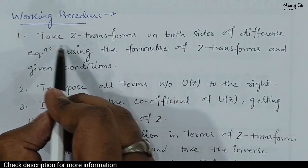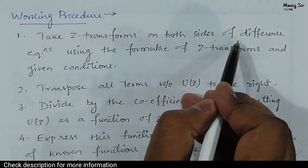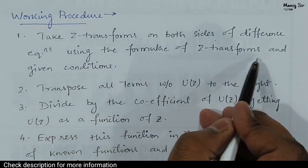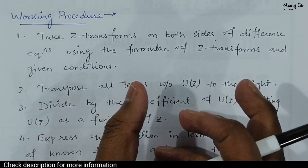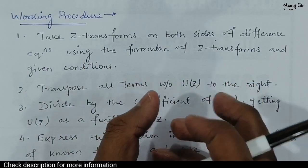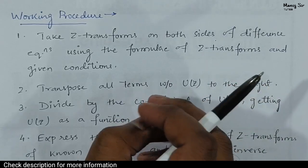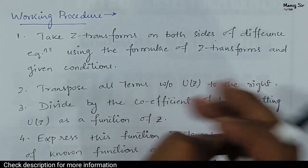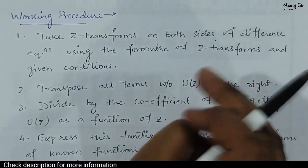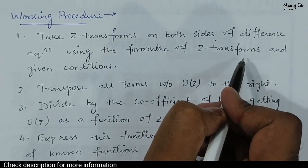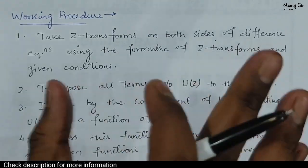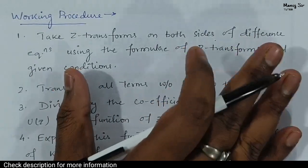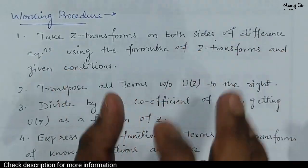The first step is to take the Z transforms on both sides of the difference equation using the formulae of Z transforms and given conditions. There are certain given conditions in the problem, and when you get a difference equation, first apply Z transform on both sides and use the formulas of Z transform. We will solve a problem based on this.